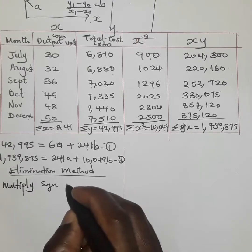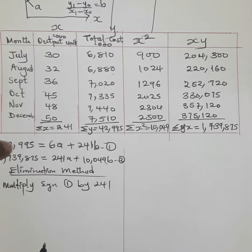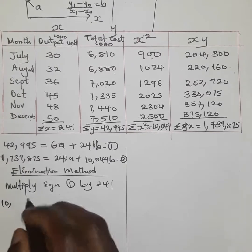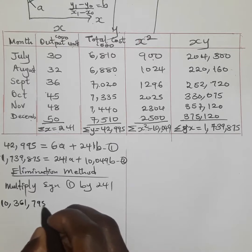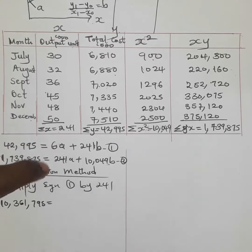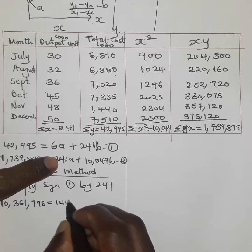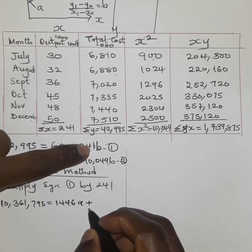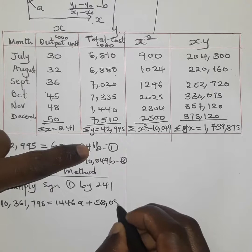Multiplying equation one by 241: 42,995 × 241 = 10,361,795, giving us 10,361,795 = 1446a + 58,081b.